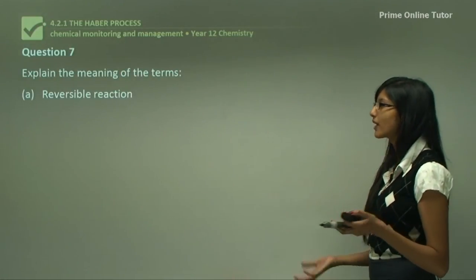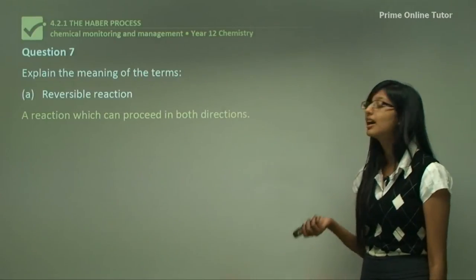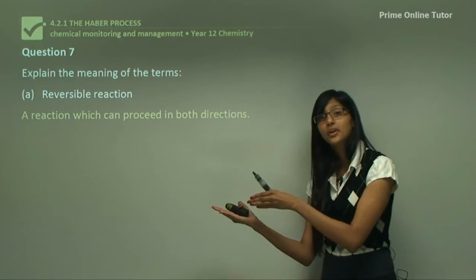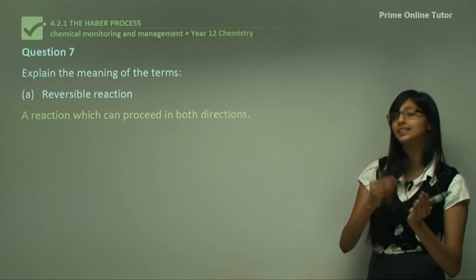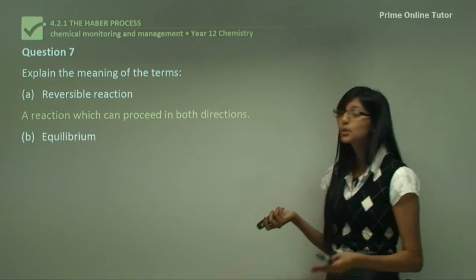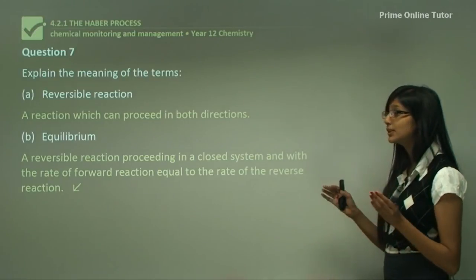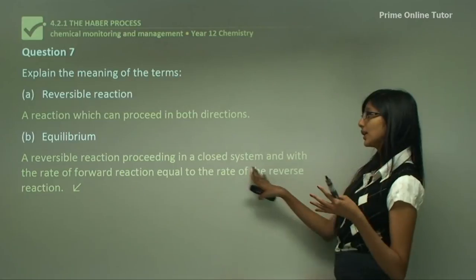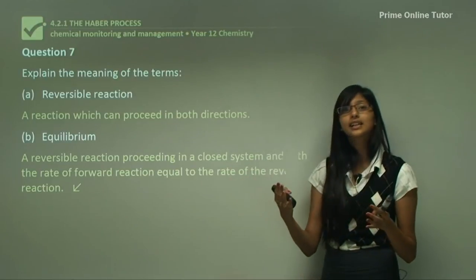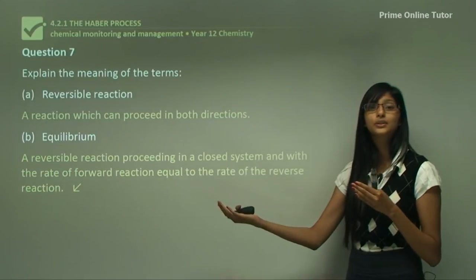Question 7 asks for some definitions involved in this reaction. A reversible reaction is a reaction that can proceed in both directions — the reactants form products and the products can dissociate back to form reactants, so both forward and backward reactions occur. Equilibrium is a reversible reaction proceeding in a closed system where the rate of the forward reaction is equal to the rate of the reverse reaction. That is the key difference between a simple reversible reaction and equilibrium.